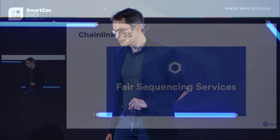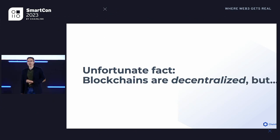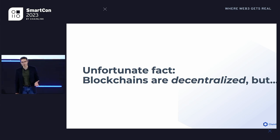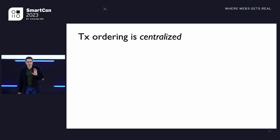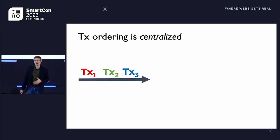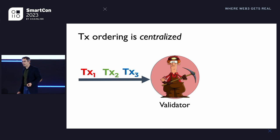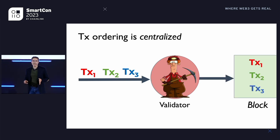First, let me explain the backdrop to Fair Sequencing Services and remind you of the problem it's trying to solve. That problem begins with an unfortunate fact about blockchain systems. Blockchains in general are decentralized — this is their main technical accomplishment. But there's a kind of dirty little open secret about blockchains, which is the fact that the process of ordering transactions is in fact temporarily, ephemerally centralized. When a bunch of transactions comes into the system, enters the mempool, it's taken up by a miner or validator. The miner or validator forms a block and gets to decide unilaterally how transactions are ordered in that block.